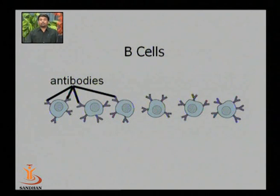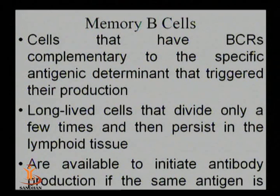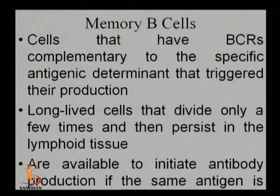After antigen exposure, the B cell receptor acquires specific immune specificity against invading antigens, and this cell is now called a mature B cell, ready to proliferate and differentiate into plasma cells as well as memory cells. Memory B cells are a type of B cell in the G0 stage of their life cycle. They are long-lived cells that divide very few times and persist in lymphatic tissue.